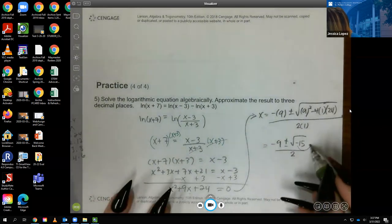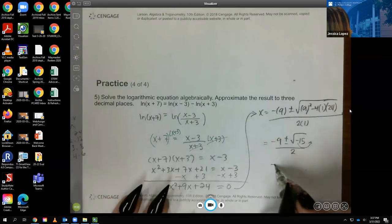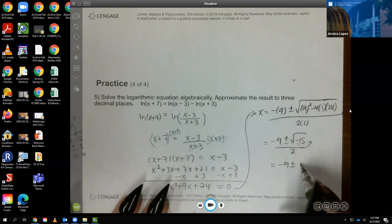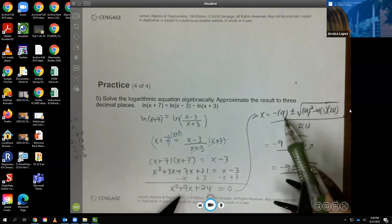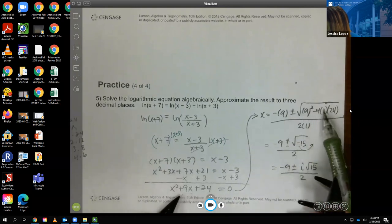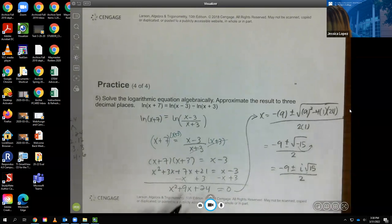I'm going to get an imaginary answer. Can I do that right? Negative b, b squared minus 4 times a times c. Yep, I did it right.